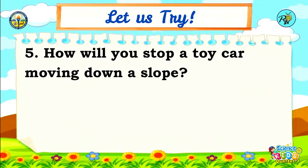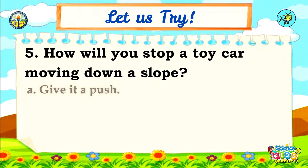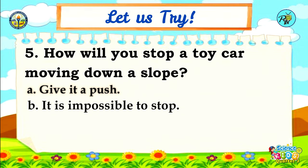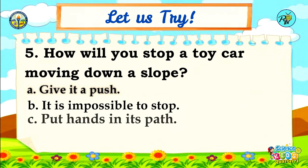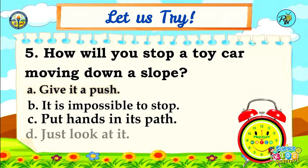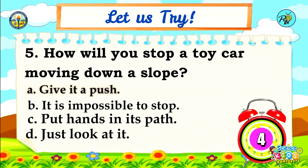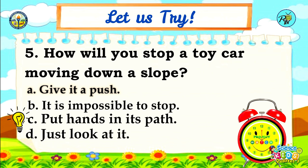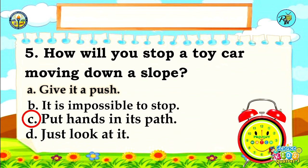Number 5: How will you stop a toy car moving down a slope? A. Give it a push, B. It is impossible to stop, C. Put hands in its path, D. Just look at it. Time is up! The answer is letter C — Put hands in its path. Great job, kids! Just keep on learning!